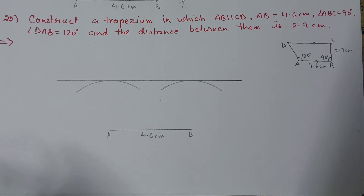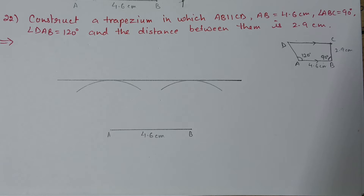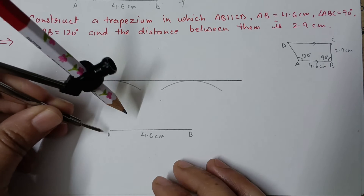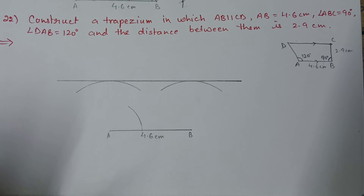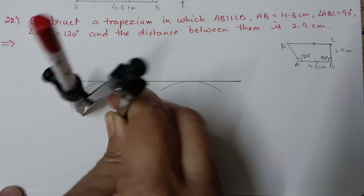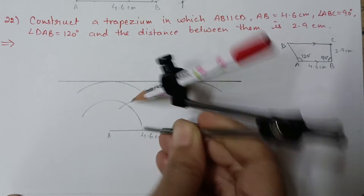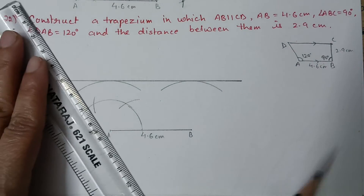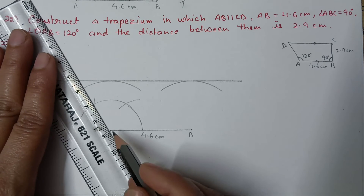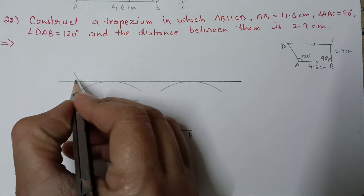We have angle DAB equal to 120 degrees and angle ABC equal to 90 degrees. At A, construct a 120 degree angle: keep the compass at A, draw the first semicircle, first arc at 60 degrees, second arc at 120 degrees. Where the 120 degree ray meets the parallel line is point D.